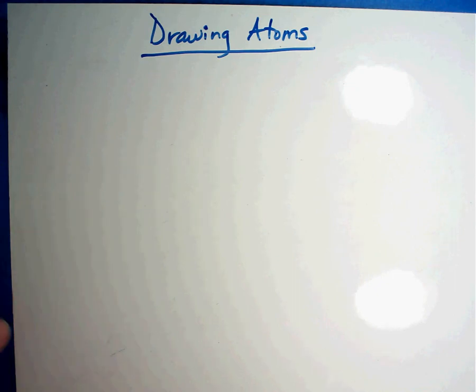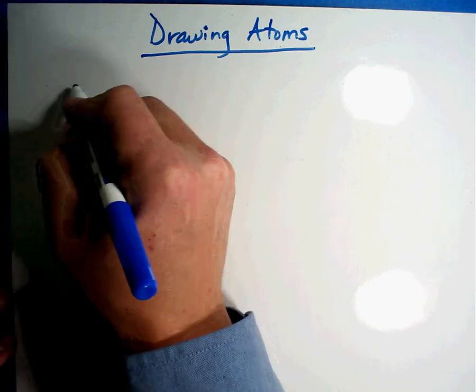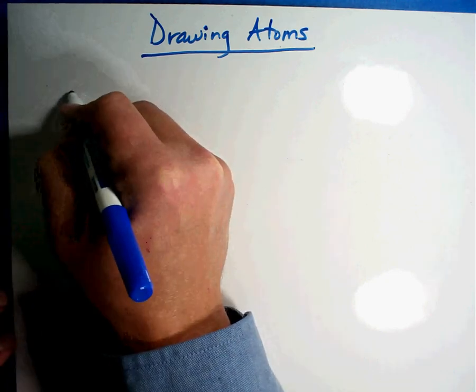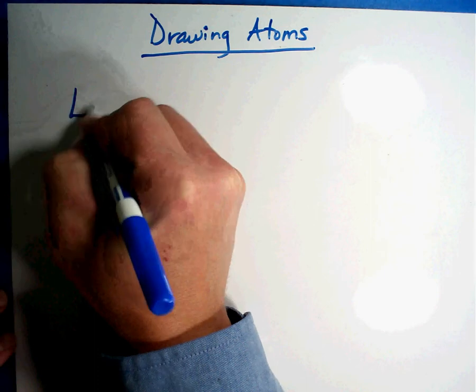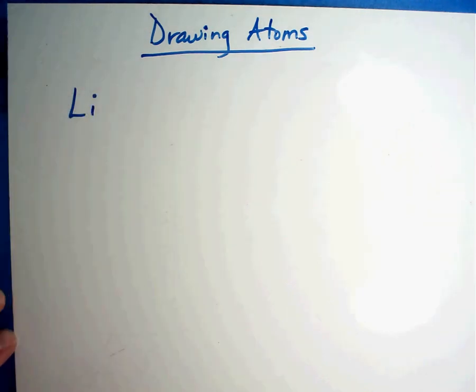We're going to talk about drawing atoms. Let's take an atom, for example, like lithium. Now, we're going to draw this atom. Let me first say this: what we're drawing is not accurate. Scientists don't really know what atoms look like, but we know a whole lot about atoms because of all the experiments we've done on them.